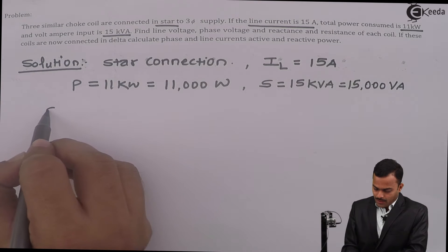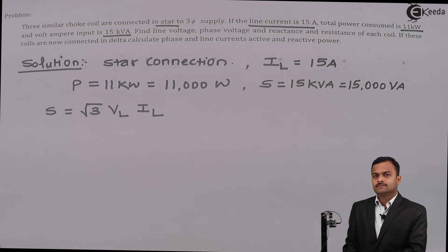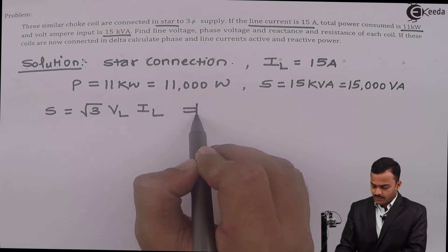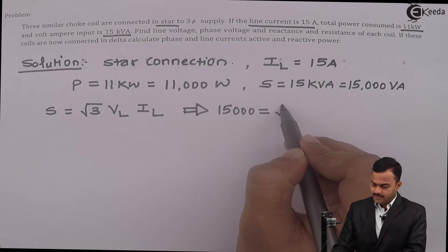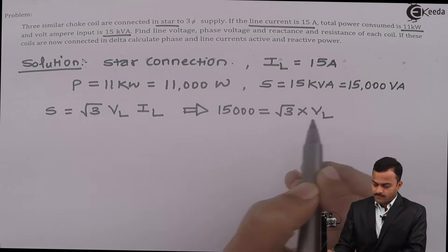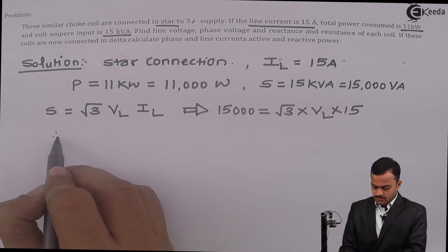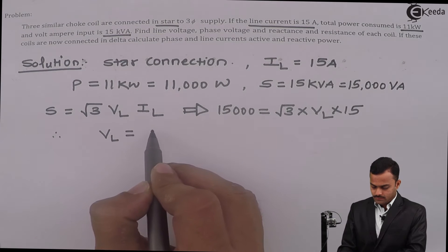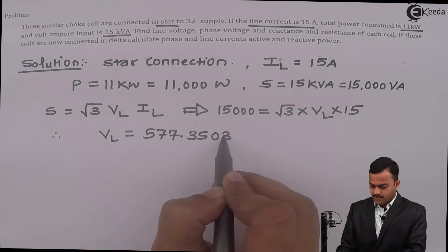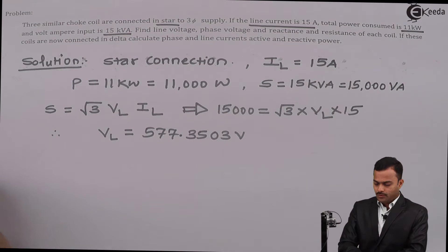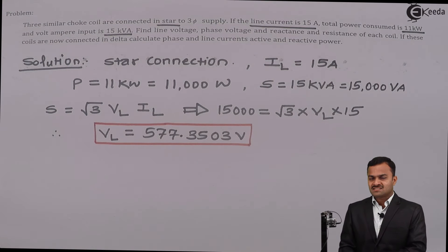To find line voltage, we use the apparent power formula: S = √3 × V_L × I_L. Here S = 15,000, I_L = 15 ampere, and V_L is unknown. Solving for line voltage gives V_L = 577.3503 volt.